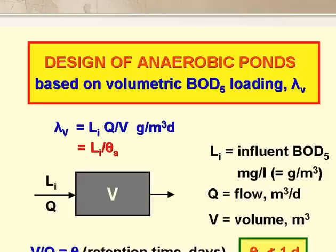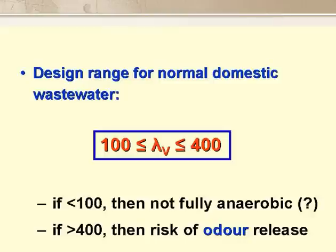The value of θA should not be less than one day. The usual range of design values for λv on anaerobic ponds treating normal domestic and municipal wastewater is 100 to 400 grams per cubic metre per day. It's generally thought that if λv is less than 100, the pond won't be fully anaerobic, though I'm not sure if this is really true. And if λv is more than 400, then there's a risk of odour release.